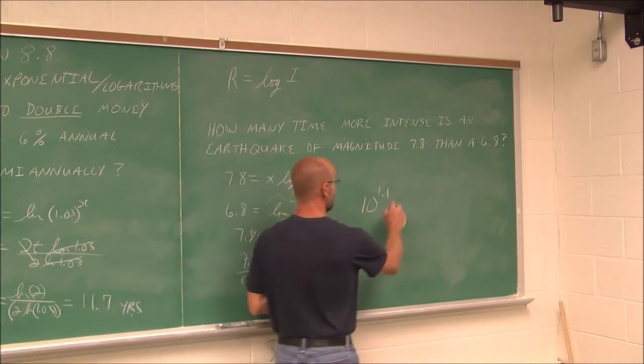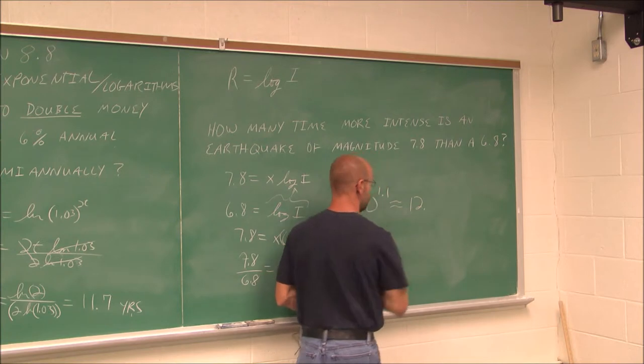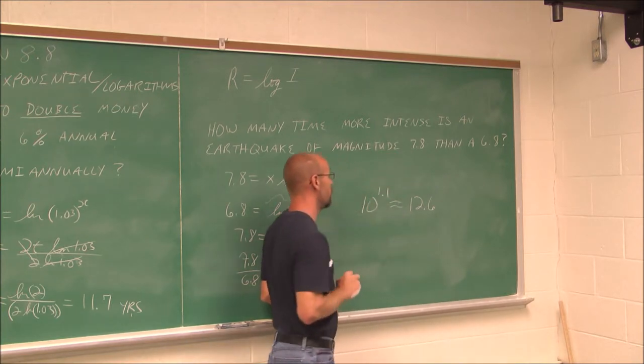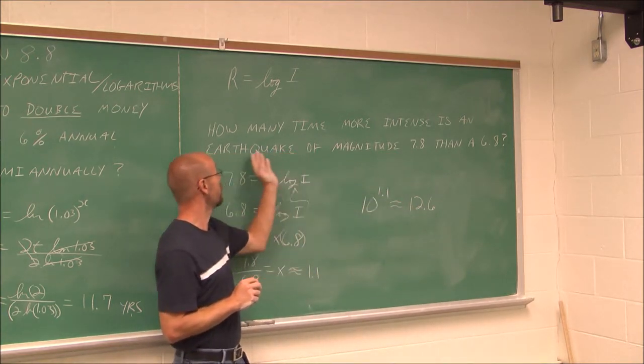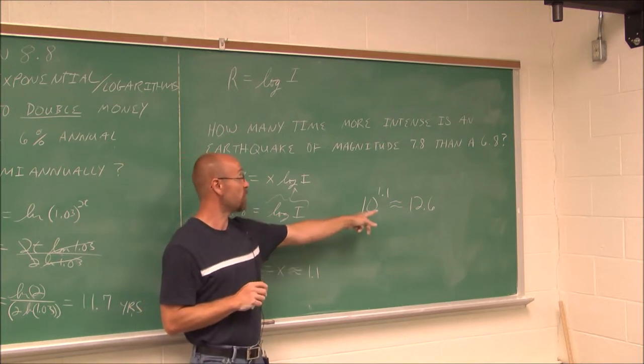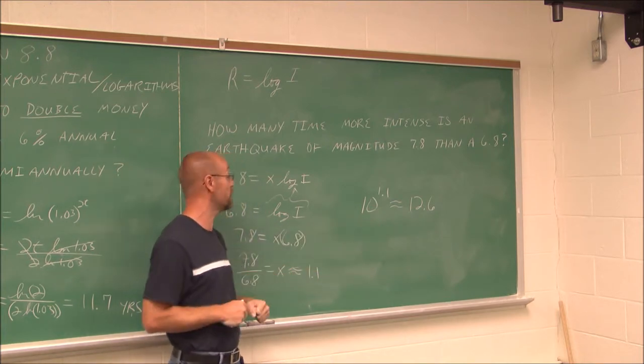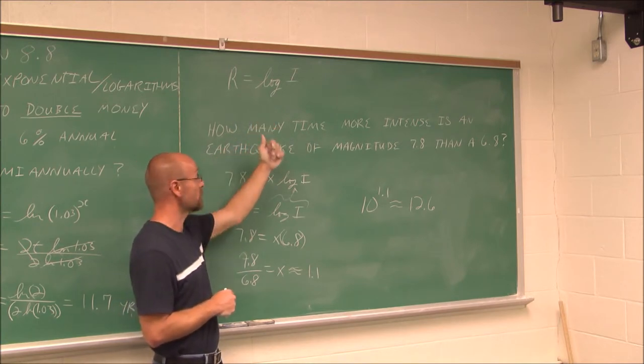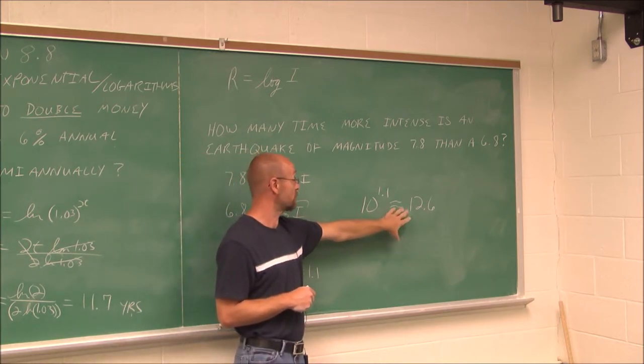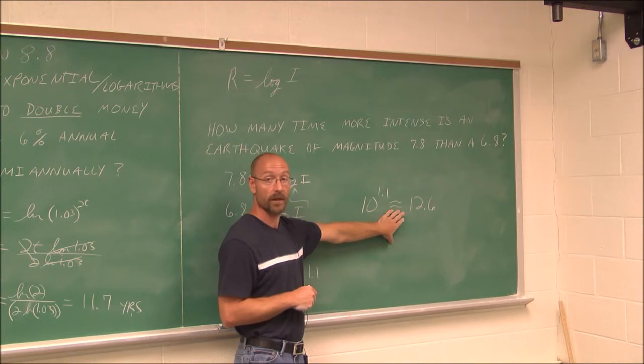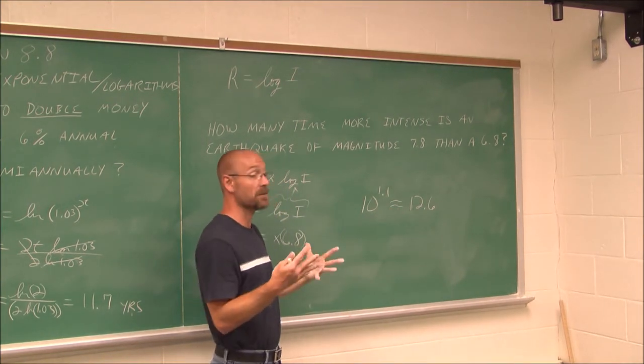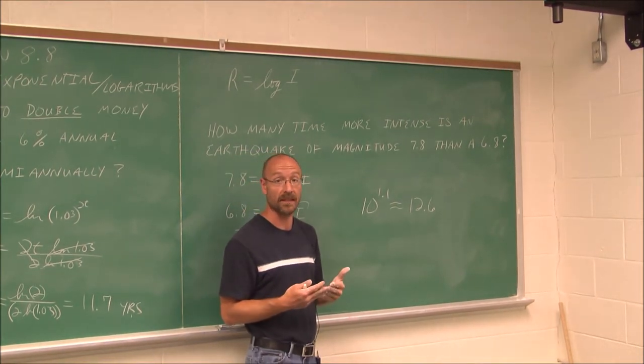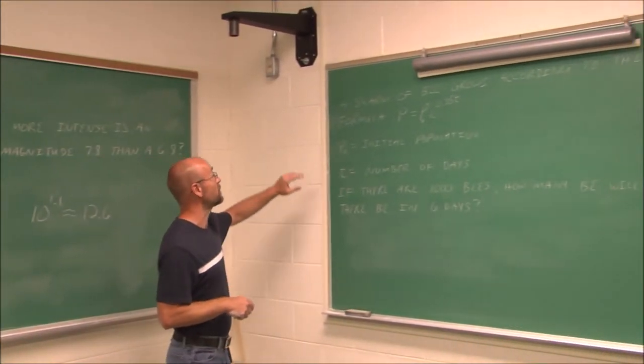10 to the 1.1, that's a value we could put in our calculator. We're going to have to round it at some point. When I put it in the calculator I got 12.59, or let's say 12.6 to one decimal. So an earthquake of magnitude 7.8 is 12.6 times more powerful of an earthquake than a 6.8. Very large energy is being released in earthquakes.